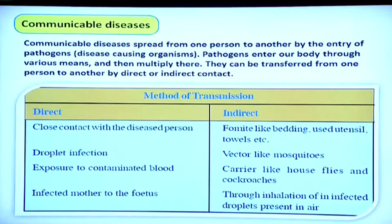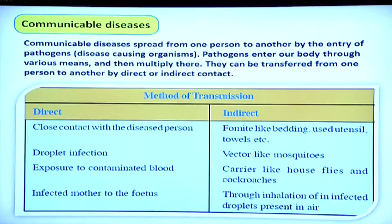Communicable diseases spread from one person to another by the entry of a pathogen — the disease-causing organism. Pathogens enter our body through various means and then multiply inside the body. They can be transferred by direct or indirect contact. Direct transfer can occur through close contact with a diseased or infected person, or through droplet infection — infections of the respiratory tract are mostly spread this way. Examples include common cold and TB.